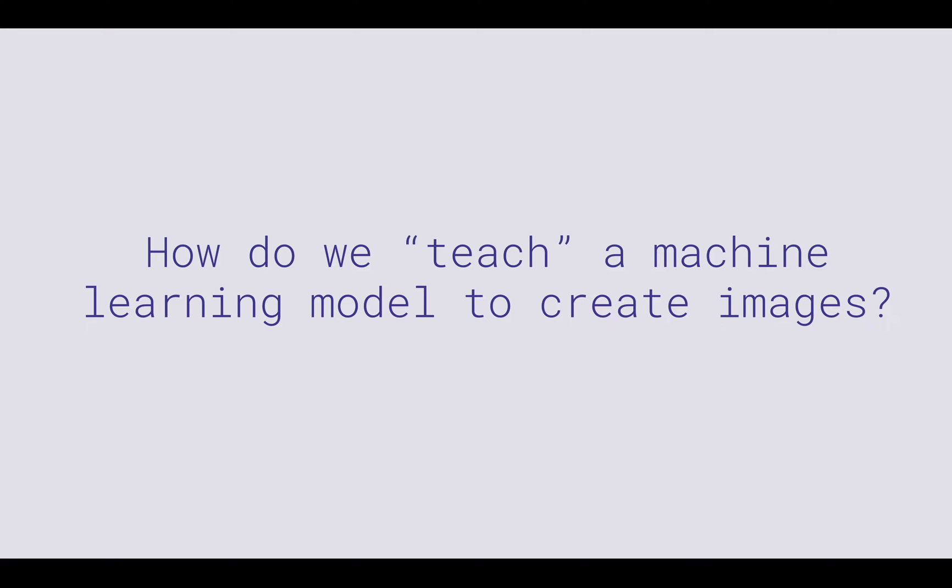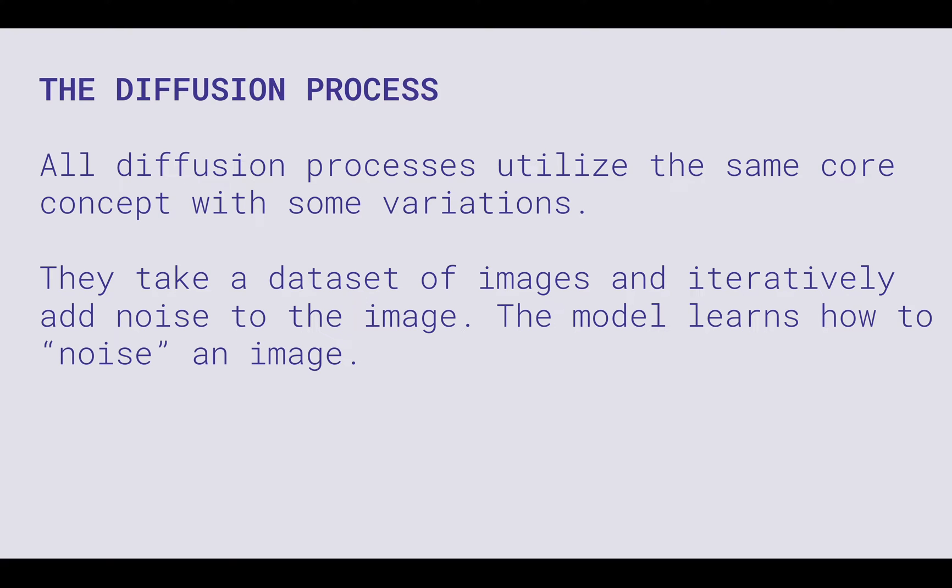The ideal goal here is that when people started using machine learning and deep learning models, they were looking at how to create images using these things. So the goal is: how do we teach a machine learning model to create images? For as long as computers have existed, we've had a programmatic approach where you draw this shape, then this shape. But that doesn't really work for machine learning. For diffusion models, all of them utilize more or less the same core concept, with some slight variations and tweaks in how they work.